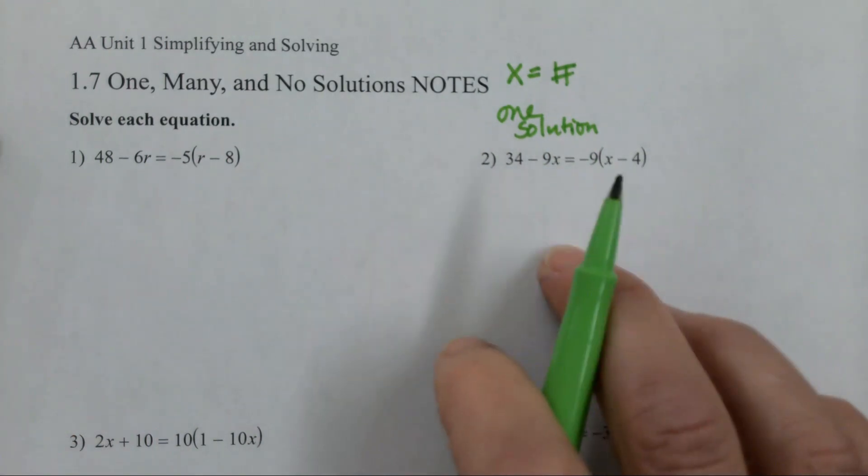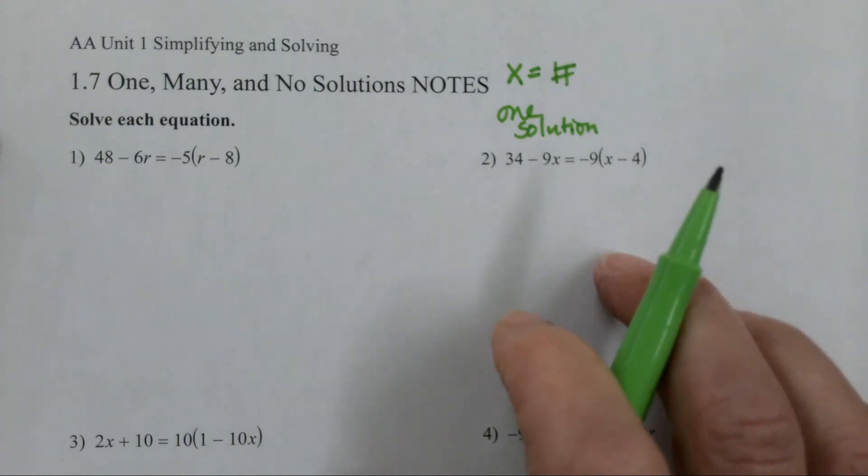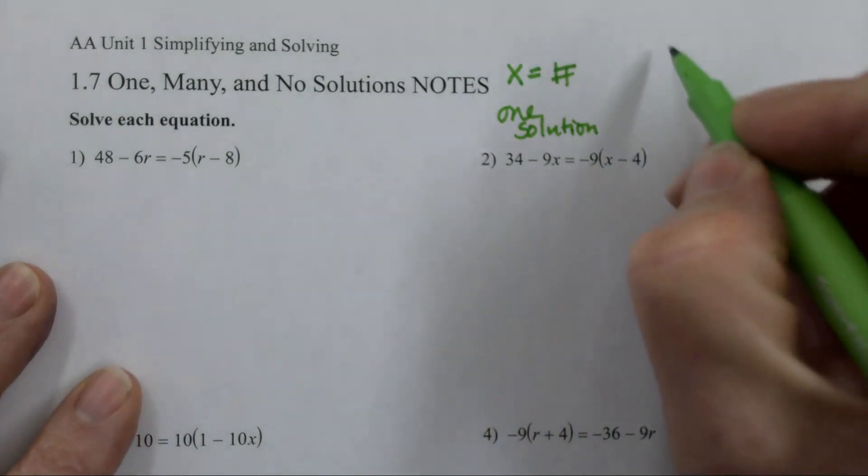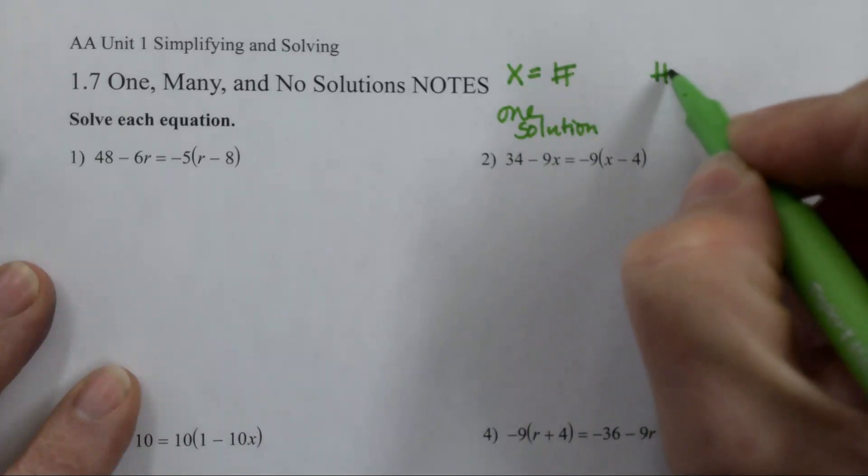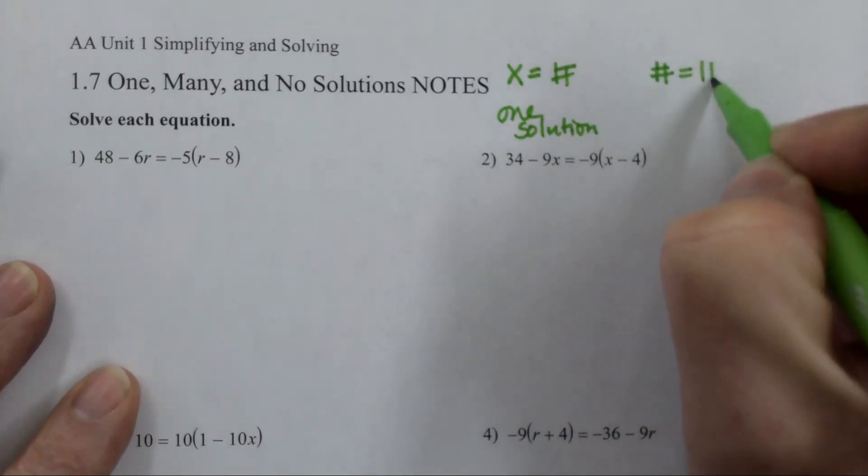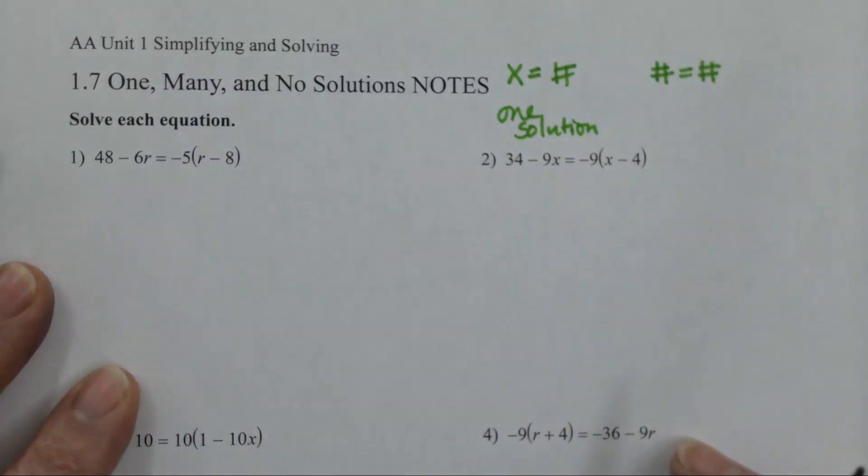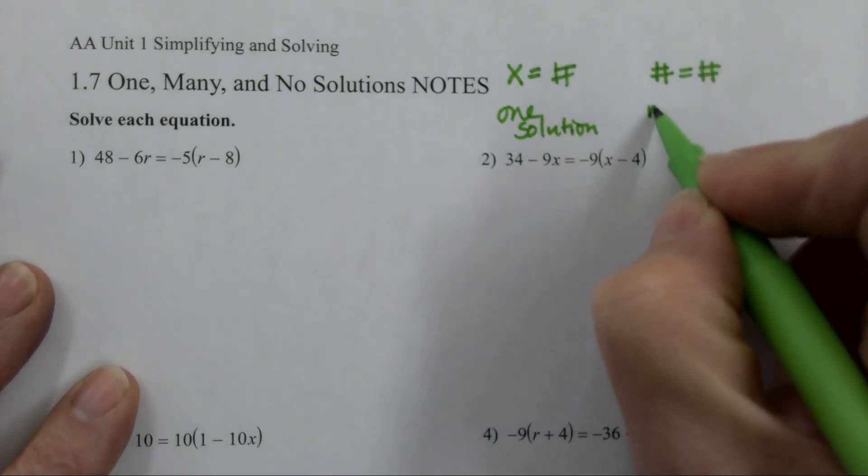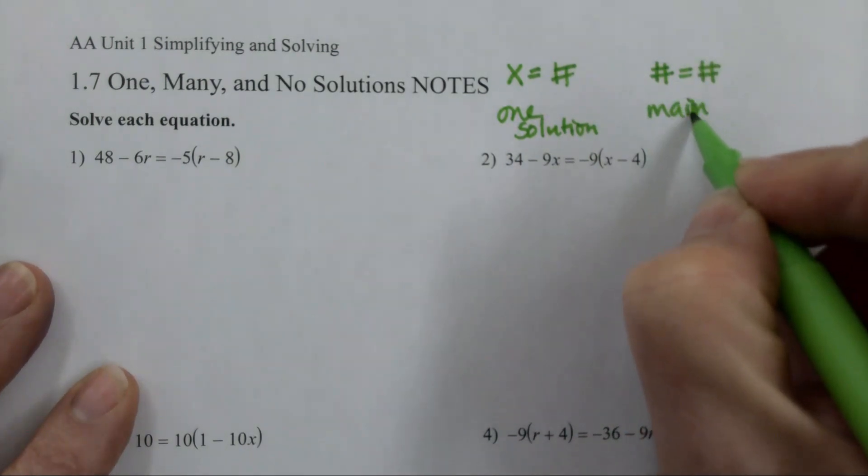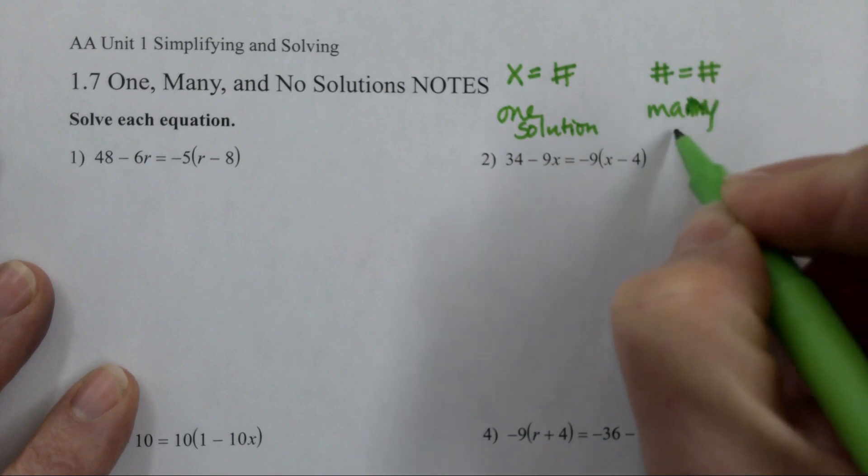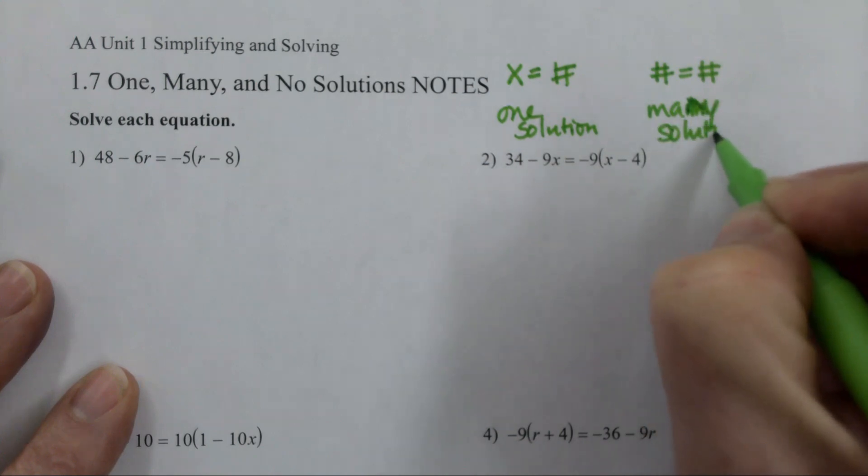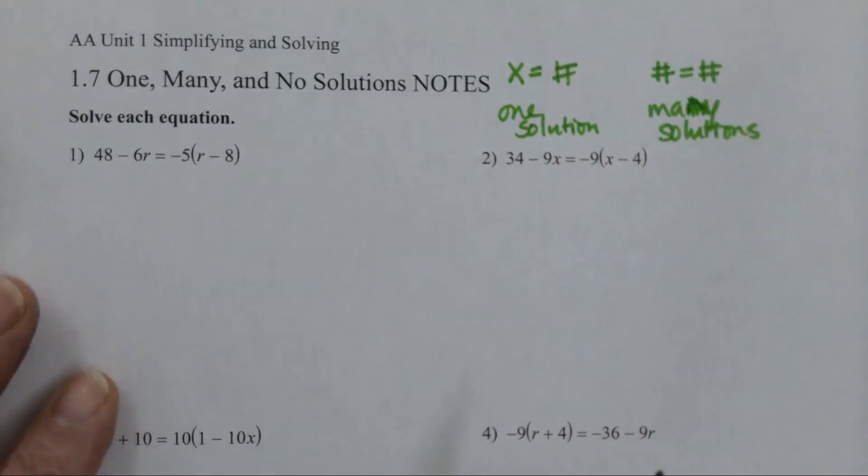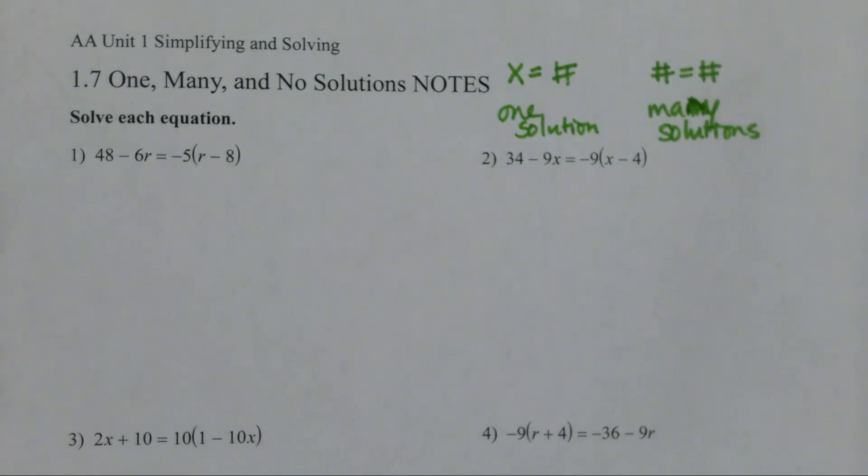The variable equals a number means one solution. If we get a number equals the same number, that is many solutions. Sometimes people will refer to that as infinitely many - there are so many solutions, all numbers work. I've also heard that referred to as all reals, meaning any number I put in there is going to work.